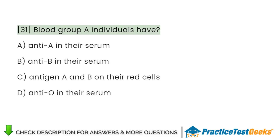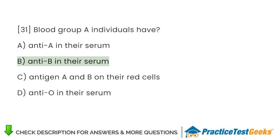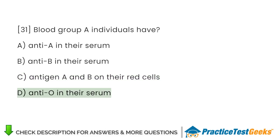Blood group A individuals have: A. Anti-A in their serum. B. Anti-B in their serum. C. Antigen A and B on their red cells. D. Anti-O in their serum.